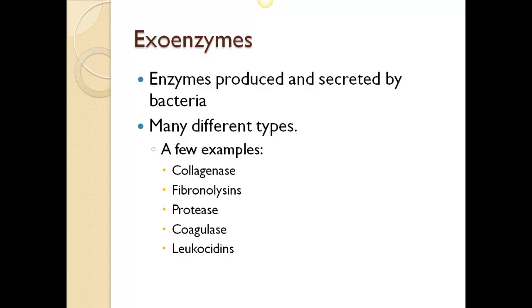Another virulence factor is the exoenzyme — enzymes produced or secreted by bacteria. The suffix '-ase' means to digest or break down. Some of these produce toxins. Examples include collagenase, protease, and coagulase — all sharing that '-ase' suffix indicating digestion or breakdown. Exoenzymes are enzymes produced within the cell and then released outside the cell to begin the process of extracellular digestion.